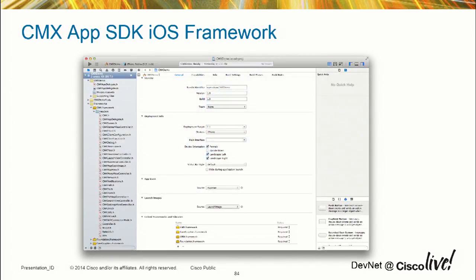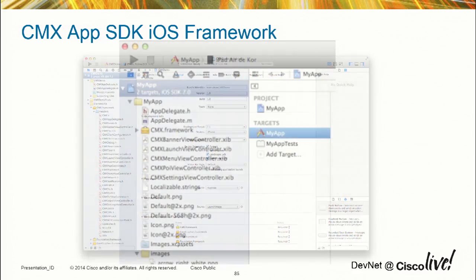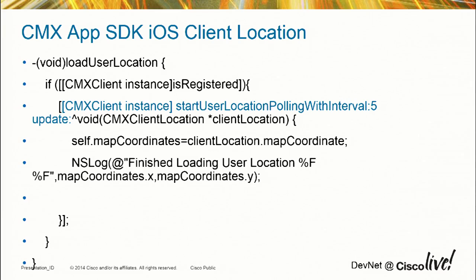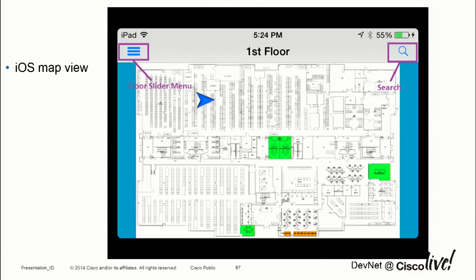For the iOS SDK, it's a framework you pull in and can use right away. It's very similar to Android: CMX client instance, start polling with the interval you want, and pull in the map coordinate information. We have supporting documentation as well. The map view is similar — in this case without a banner since we didn't want to use banners for this particular use case. There's a sliding menu and search capability, no different from the Android platform.